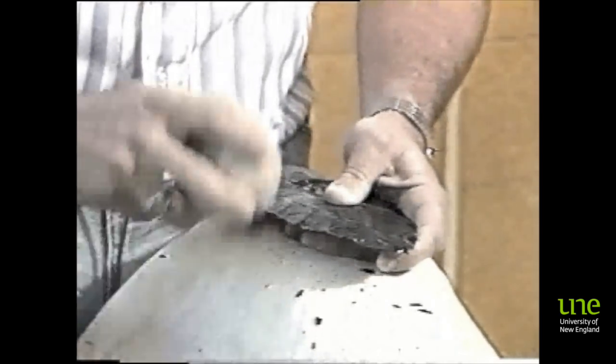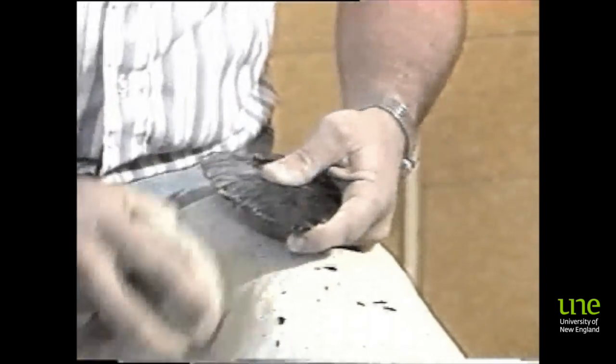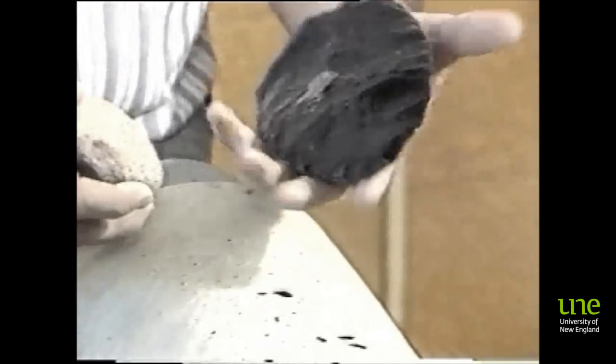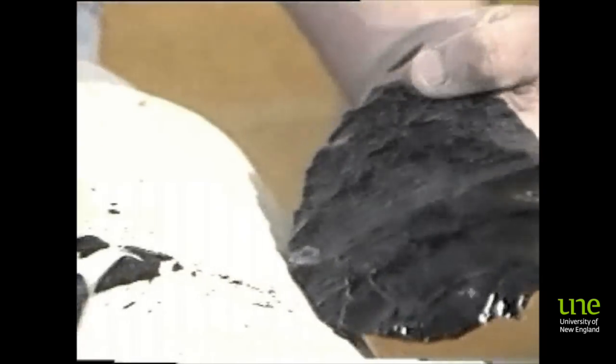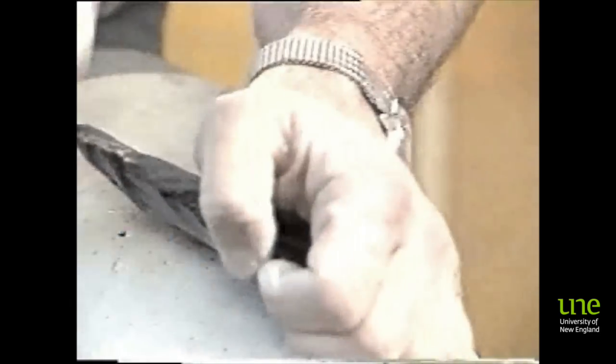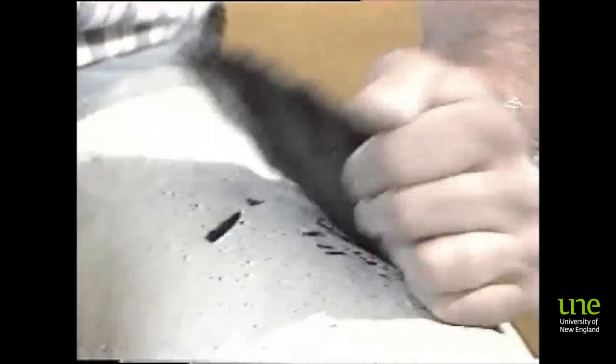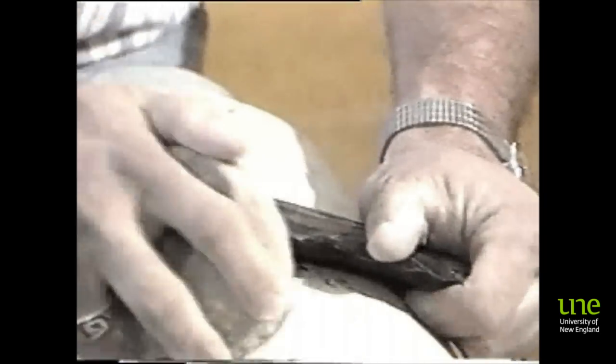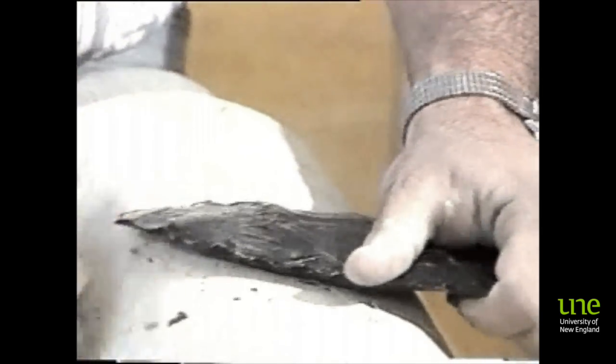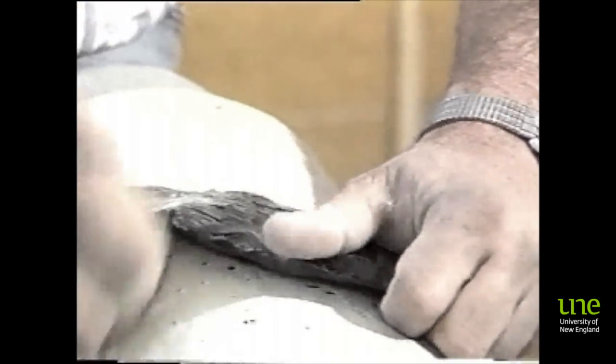From now on, the same attribute that makes obsidian easy to flake now becomes your enemy. Because from now on, the amount of force that I need to get the flake off properly is enough force to break the biface. So if your platform, surface topography, striking angle, and amount of force are not just exactly right, like she breaks in half. So you have to be real careful. And if I had a 10-cent piece for every biface I've broken, I could retire.